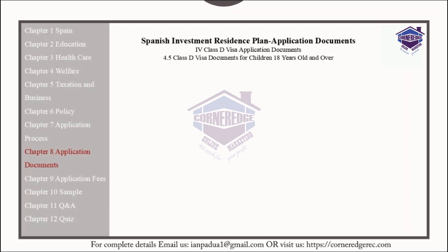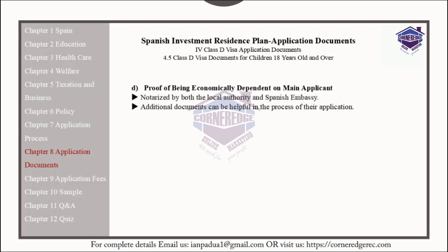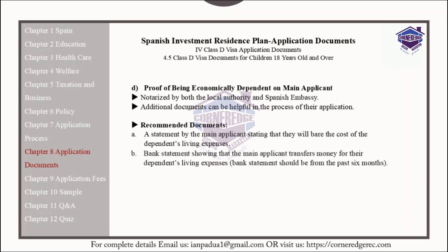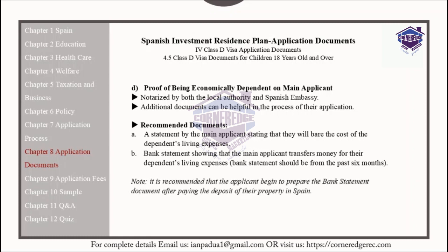Children aged 18 and over must also provide proof of being economically dependent on the main applicant, which must be notarized by both the local authorities and the Spanish embassy. Additional documents can be helpful in processing their application. Recommended documents include a statement by the main applicant stating that they will bear the cost of the dependents' living expenses, and a bank statement showing that the main applicant transfers money for their dependents' living expenses. The bank statement should be from the last six months.